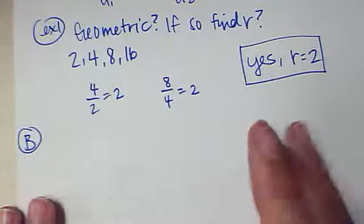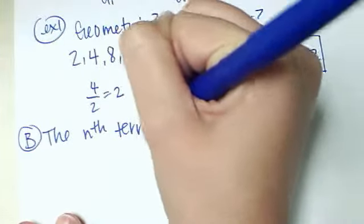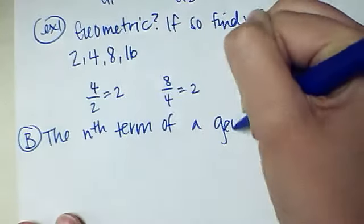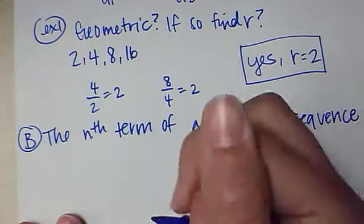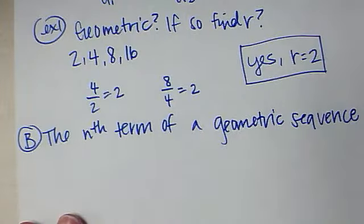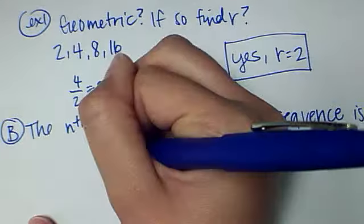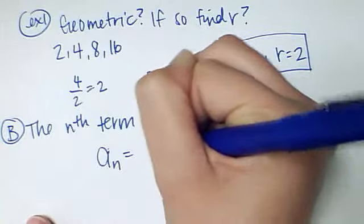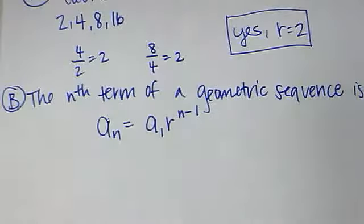Part B, the nth term of a geometric sequence. This is another special sum formula. The nth term of a geometric sequence is A sub n equals A sub 1 times R to the n minus 1. That's to find any number of terms.